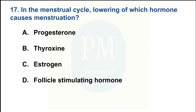In the menstrual cycle, lowering of which hormone causes menstruation? Option A — Progesterone; Option B — Thyroxine; Option C — Estrogen; Option D — Follicle stimulating hormone. The correct option is Option A: Progesterone.